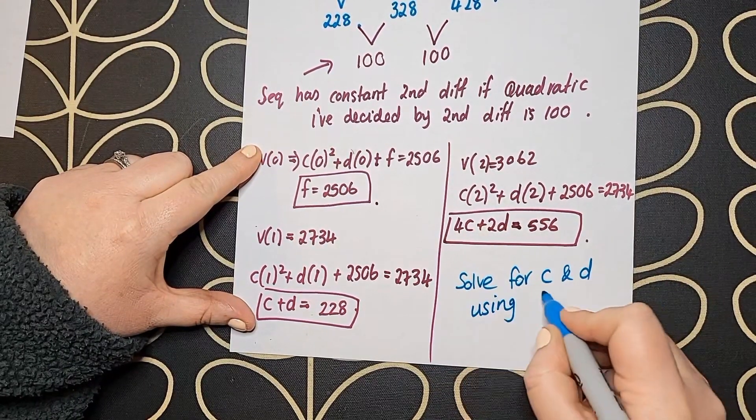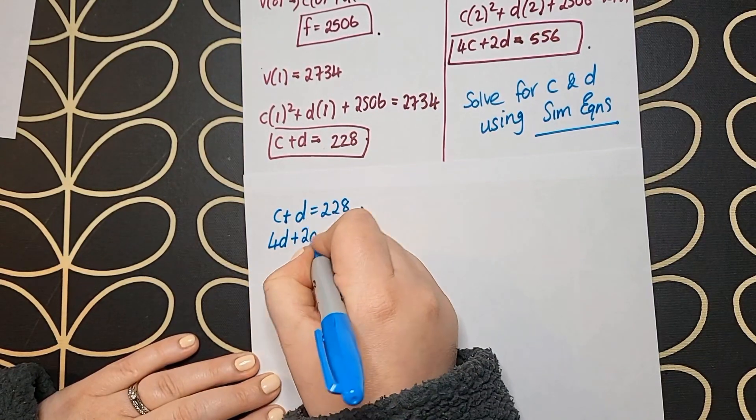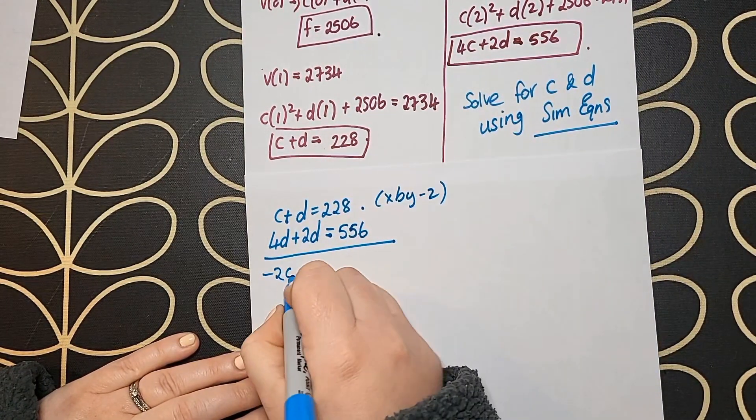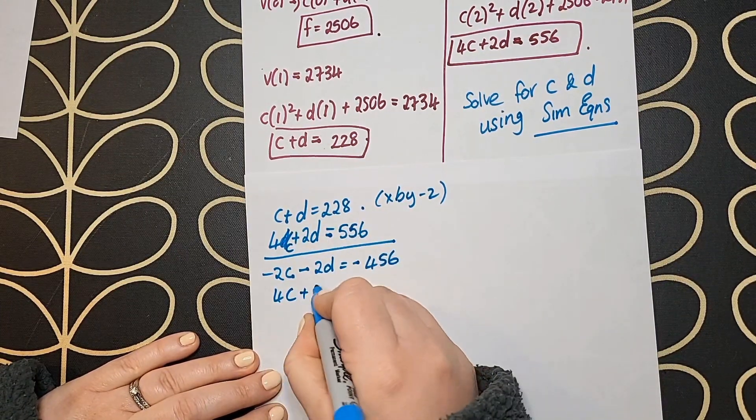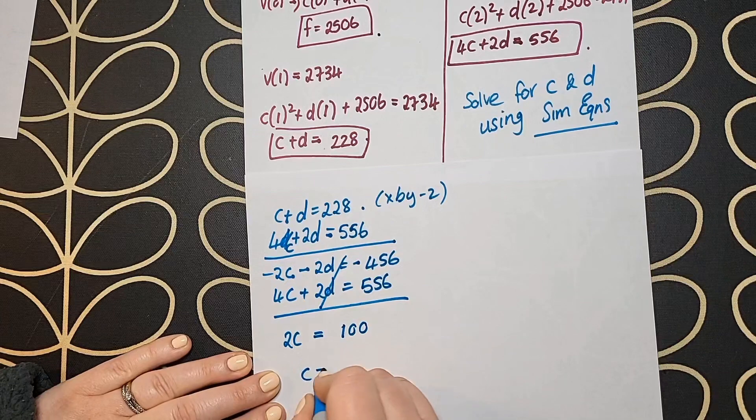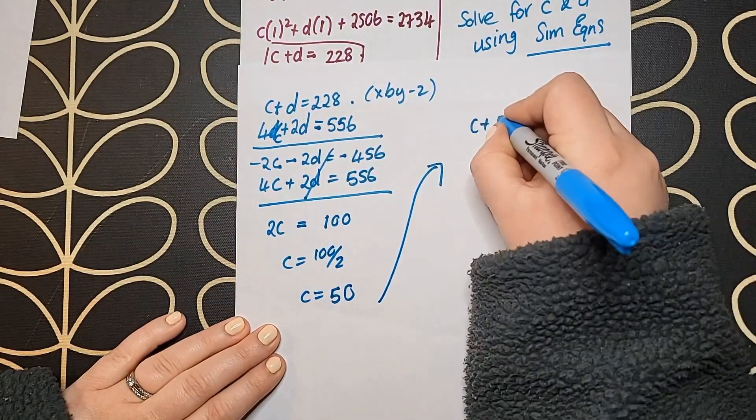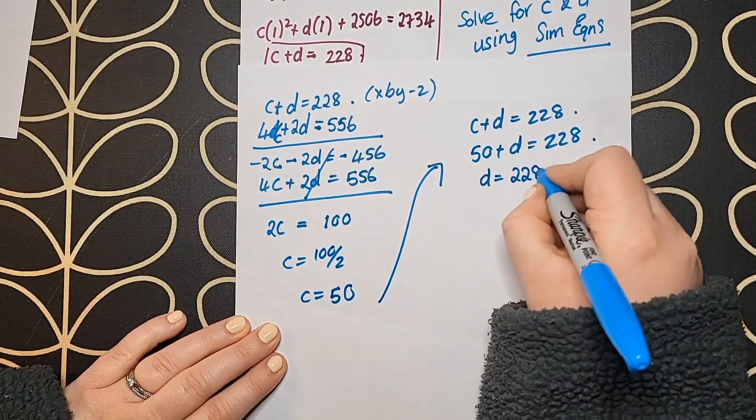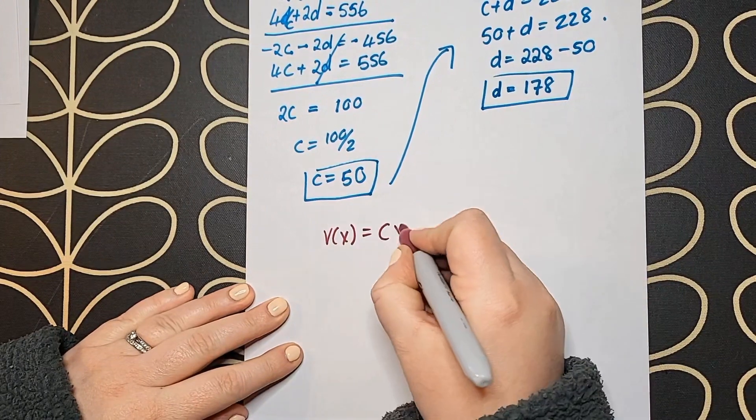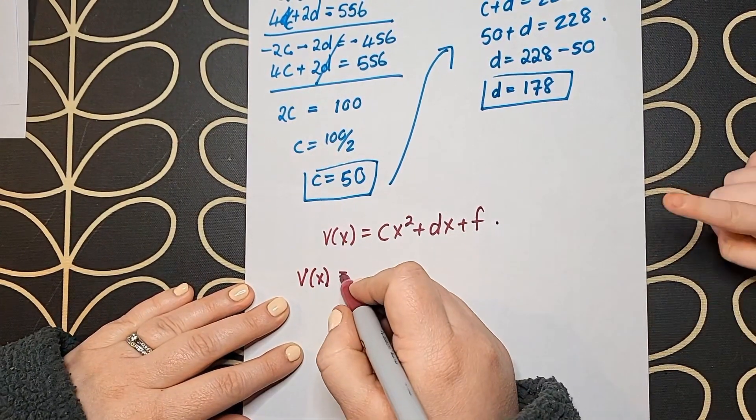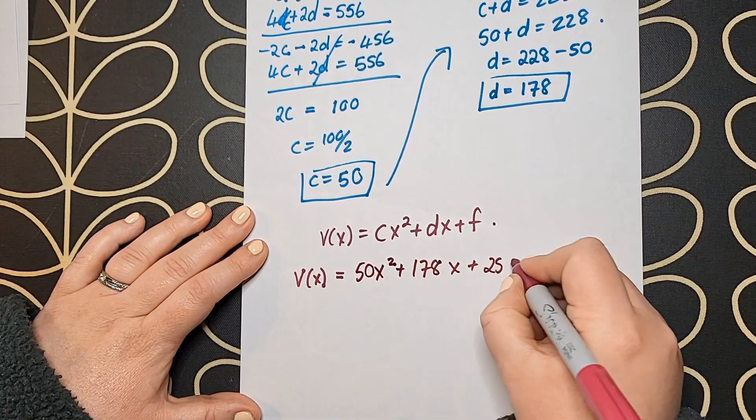I need to solve for c and d using simultaneous equations. Simultaneous equations pop up very often and it's a skill you really need in your arsenal. Once we do our simultaneous equations, we find c = 50 and d = 178. We pop that information into the blank generic v(x) formula that we were given. You can check the answer if you want to double-check, but it works.